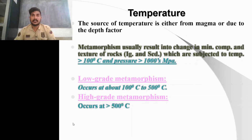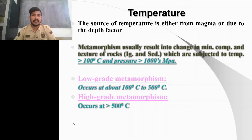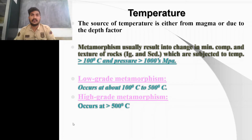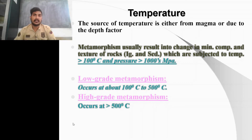Temperature is one of the most dominant metamorphic agents. It can range from around 100–150°C to around 900°C — that is, from a diagenesis level up to an anatexic melting level. It can start from the formation of sedimentary rock up to the temperature limit where the rock will melt.